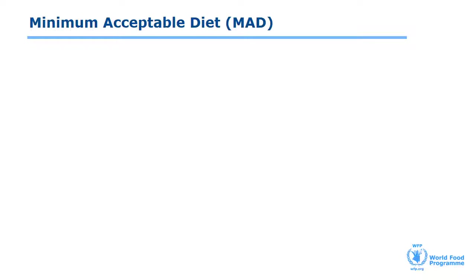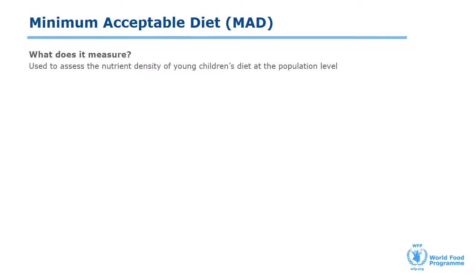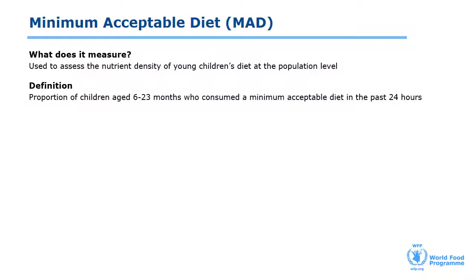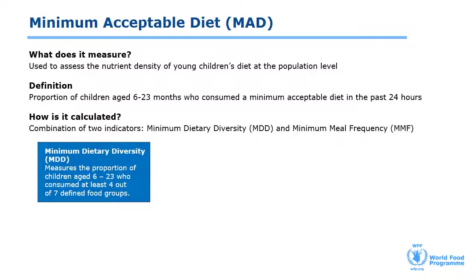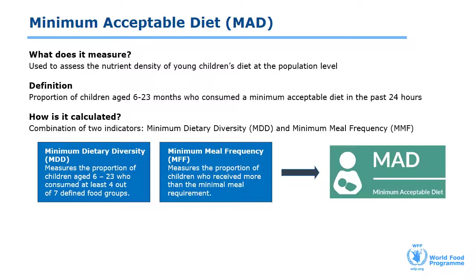The Minimum Acceptable Diet, MADD, is an internationally validated infant and young child feeding indicator. It's used to assess the nutrient density of young children's diet at the population level. MADD measures the proportion of children aged 6 to 23 months who consumed a minimum acceptable diet outside breast milk consumption in the past 24 hours. The MADD indicator is calculated using a combination of two indicators: the Minimum Dietary Diversity (MDD) and the Minimum Meal Frequency (MMF). The Minimum Dietary Diversity measures the proportion of children aged 6 to 23 months who consumed at least 4 out of 7 defined food groups. The minimum meal requirement depends on the age of the child and whether the child was breastfed or not.